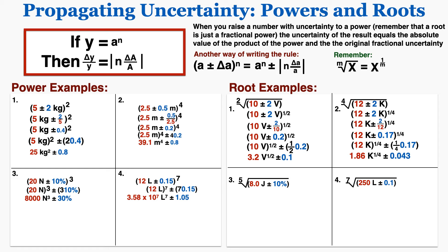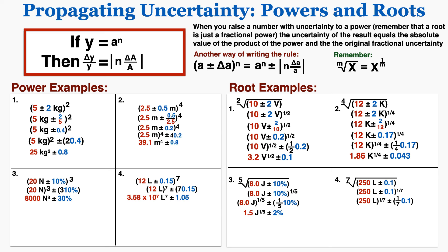In number three we have this number under the fifth root, so that's equal to that number raised to the power of 1 fifth. Because percentages behave so much like fractional uncertainties, I can actually just multiply that percentage by 1 fifth to get my answer of 2%. In number four this is equivalent to 250 plus or minus 0.1 raised to the power of 1 seventh, so when I multiply that out this is what I get, and this is my answer for number four.